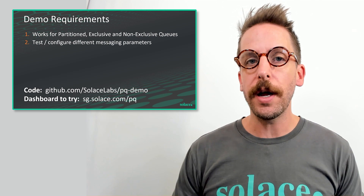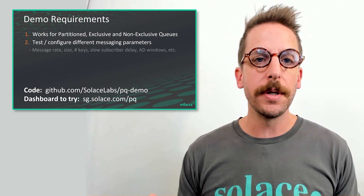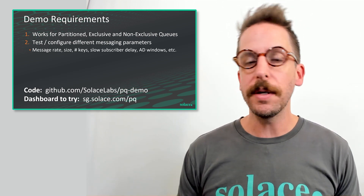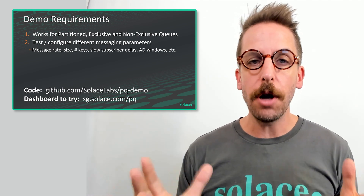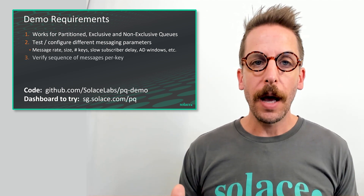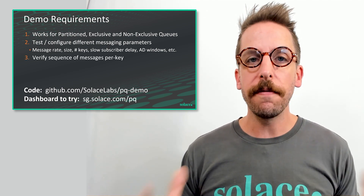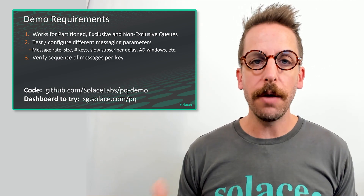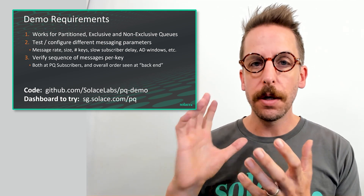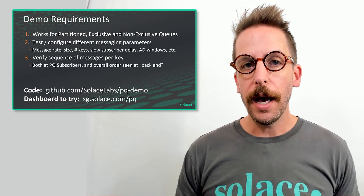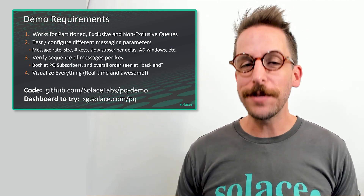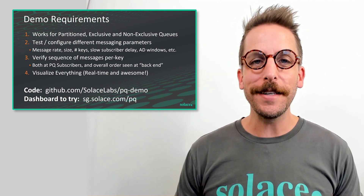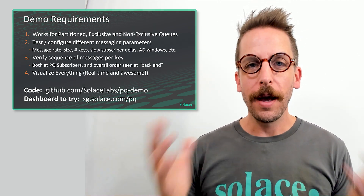So I built this demo to play around with partition queues and show how they compare to exclusive and non-exclusive queues. I also wanted it so I could adjust various parameters such as message rate, message size, slow subscriber delay, and number of keys — all dynamically on the fly. I wanted to have sequencing verification and order checking built in, both at the consumers and at the back end. And I also wanted to make it visual, graphical, interesting to look at and hopefully to learn from. So enough slides, let's get into the demo.